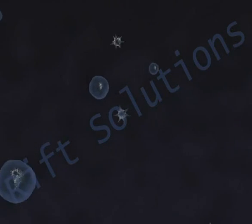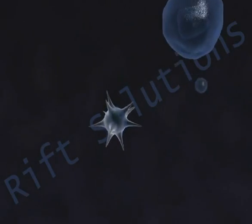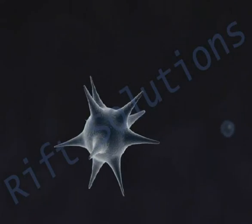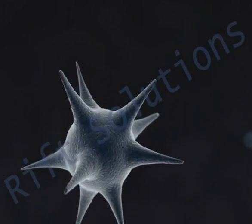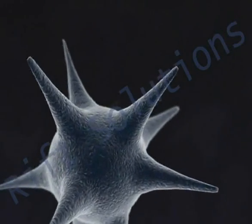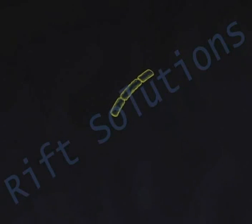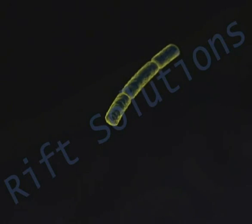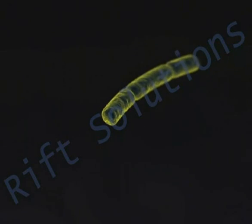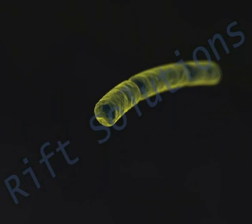Viruses are tiny. They are so small, in fact, they cannot be viewed without the help of an electron microscope. This is because viruses are, on average, smaller than a regular wavelength of visible light.